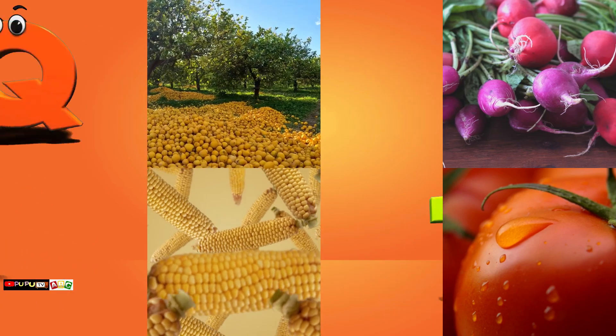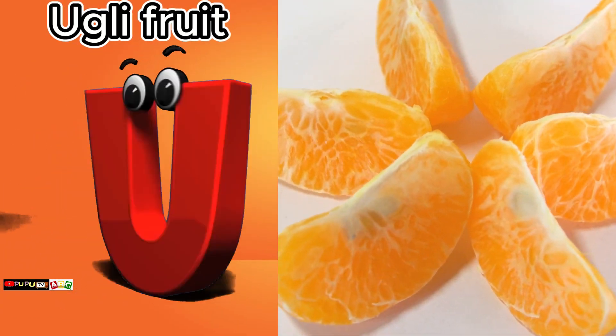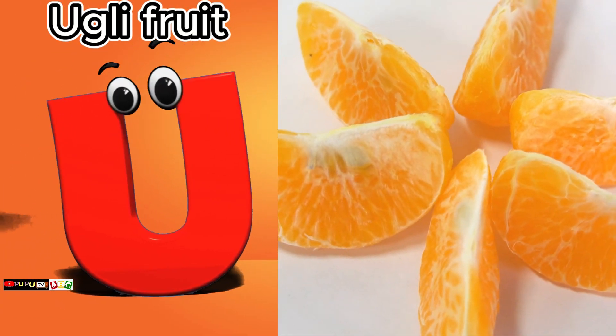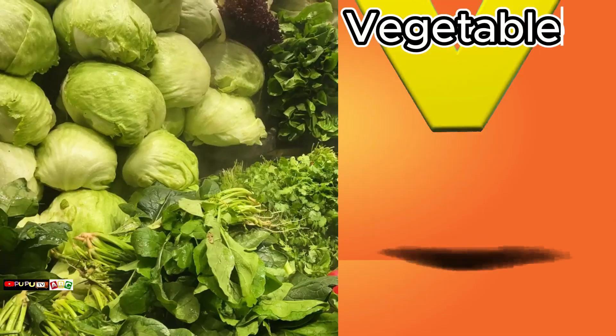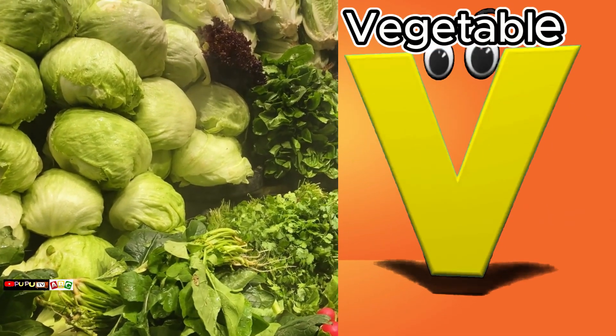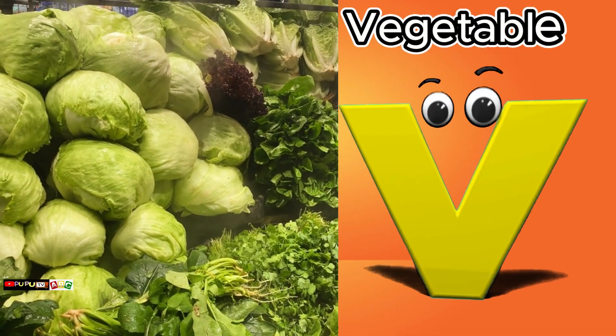U is for ugly fruit. U, ugly fruit. V is for vegetables. V, vegetables.